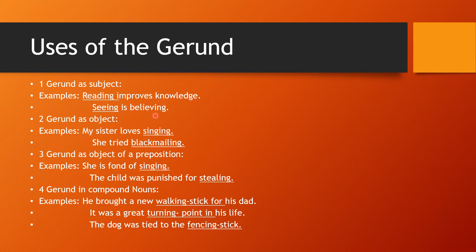Gerund as subject. Look at the following examples: 'Reading improves knowledge.' 'Seeing is believing.' Reading and seeing are gerunds. What improves knowledge? Reading — it comes before the verb, so it is a gerund as subject. What is believing? Seeing — it also comes before the verb is, so it is gerund as subject.